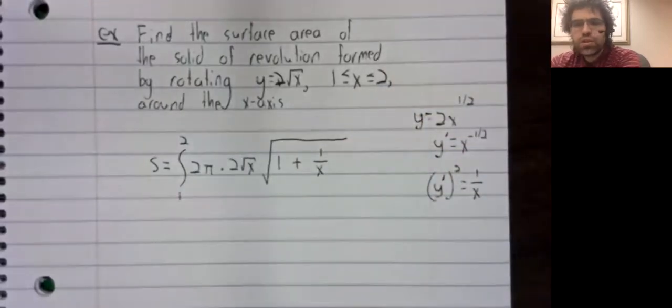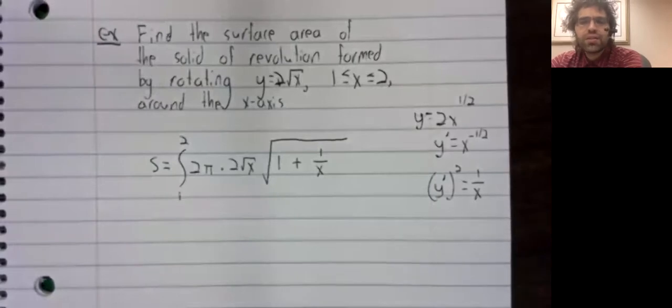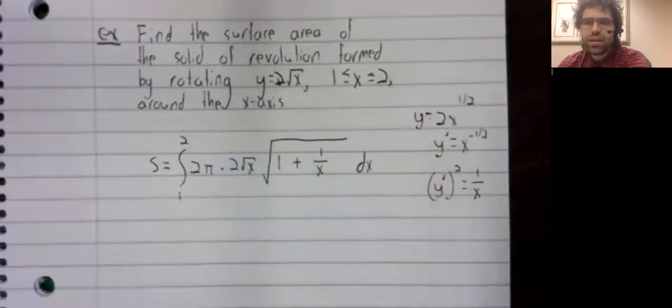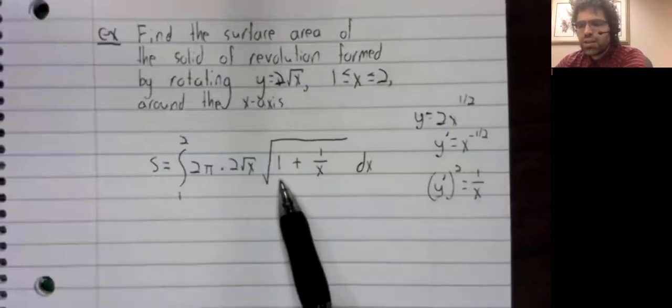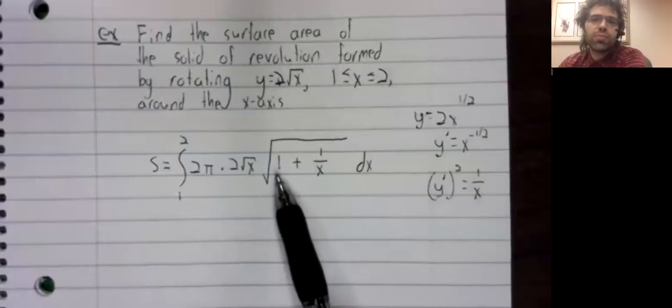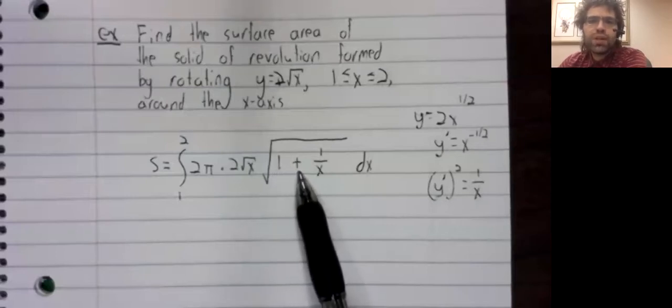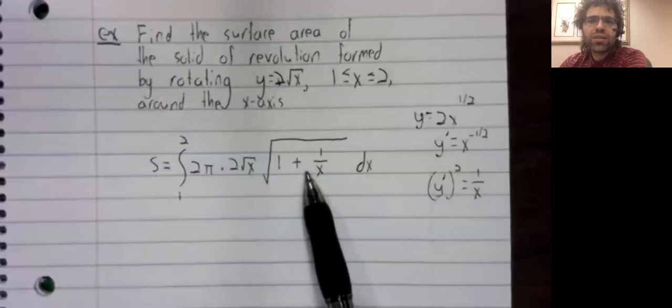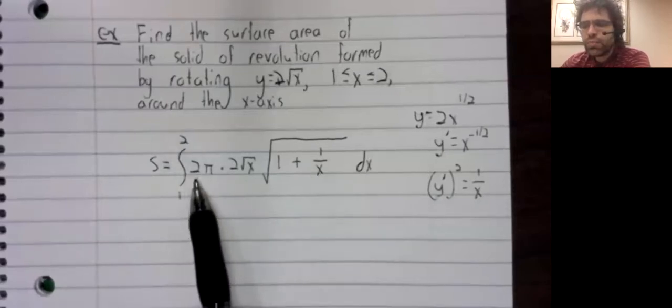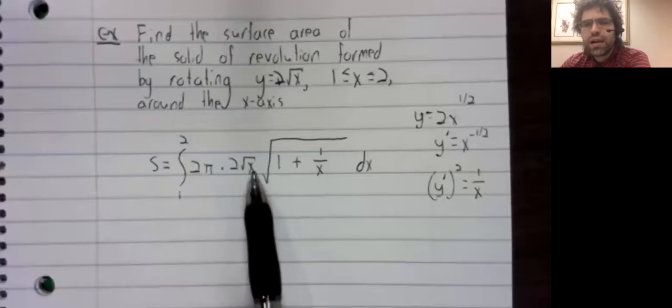The issue is that it's not necessarily obvious where to go from here. This is composition, but this doesn't seem to be a u substitution problem. If you let u be 1 plus 1 over x, du would be negative 1 over x squared. And we certainly don't have that.